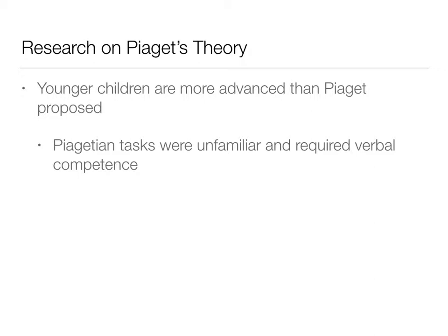Younger children are much more advanced than Piaget thought. Theory of mind is a great example — kids are way better at thinking about things from others' perspectives than Piaget believed. We'll see the same thing with object permanence; kids have it way earlier than Piaget thought. A lot of his tasks required verbal or motor competence, which made them hard for children to pass even if they had the cognitive understanding. It wasn't that they lacked object permanence or theory of mind — the tasks were too difficult and unfamiliar for them to demonstrate those abilities.